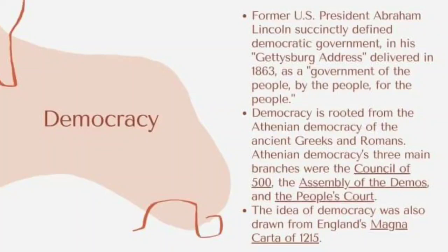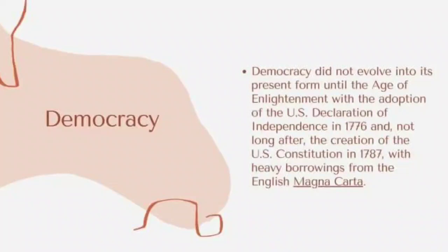The idea of democracy was also drawn from England's Magna Carta of 1215. The Magna Carta, also known as Magna Carta Libertatum — medieval Latin for 'Great Charter of Freedoms' — is a royal charter of rights agreed to by King John of England at Runnymede near Windsor on June 15, 1215. It was an agreement of peace between the king and the rebel barons. Democracy did not evolve into its present form until the Age of Enlightenment, with the adoption of the U.S. Declaration of Independence in 1776 and the creation of the U.S. Constitution in 1787, with heavy borrowings from the English Magna Carta.